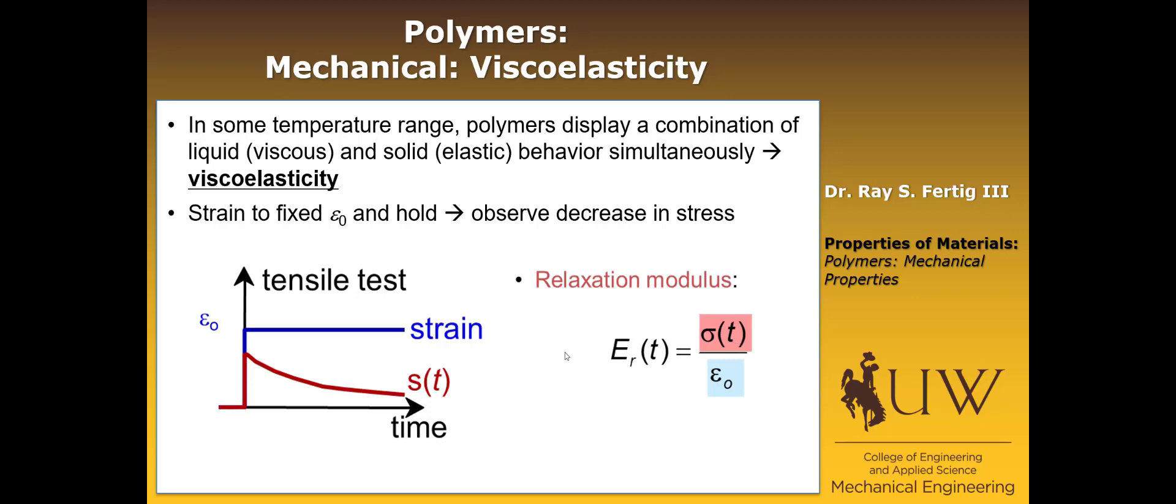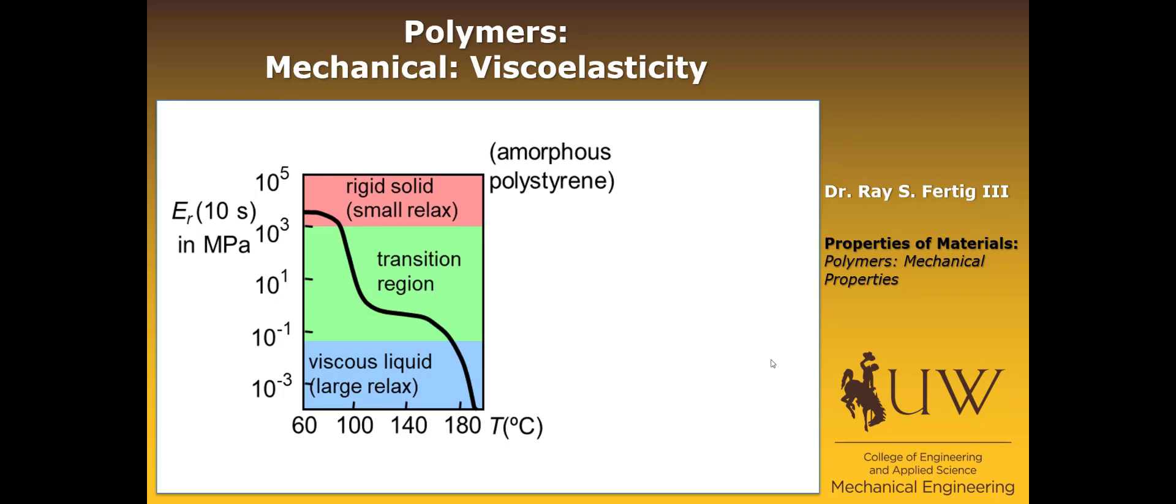And what we're going to observe is a decrease in stress. So that's what I'm showing you on this curve here. Here's the time, and here's the stress. If we load up in this blue curve in strain, and we just hold, the stress will initially follow elastically, but then there'll be a decrease as the polymer viscously flows to accommodate that strain, and then the stress will decrease. We quantify that by what's called the relaxation modulus, which is just the stress as a function of time divided by that applied strain that's fixed. And a lot of times in polymer properties, you'll see this relaxation modulus reported.